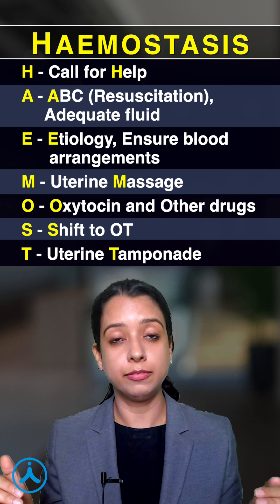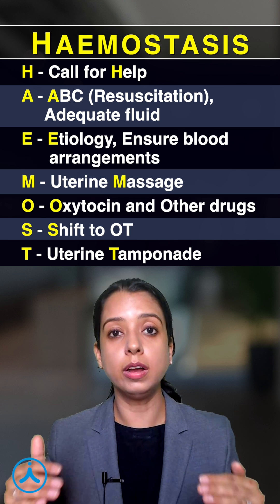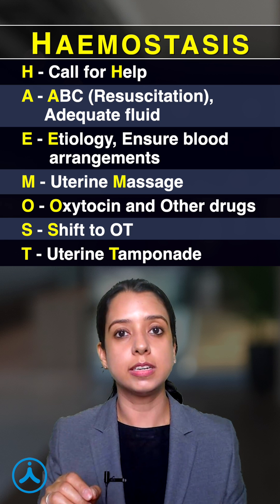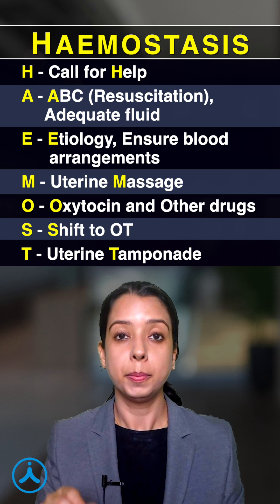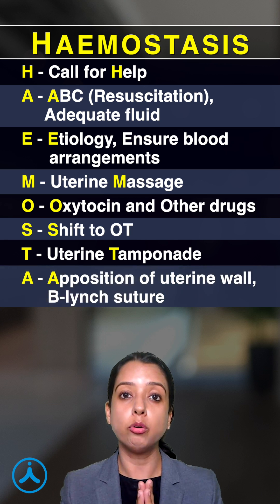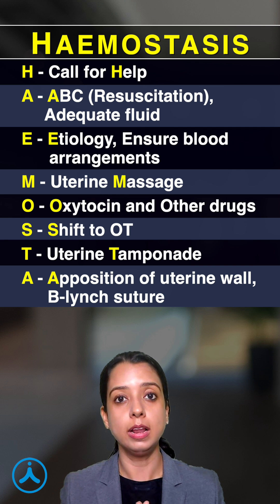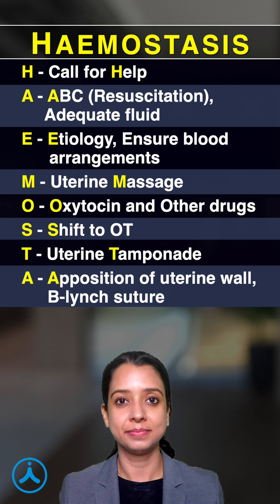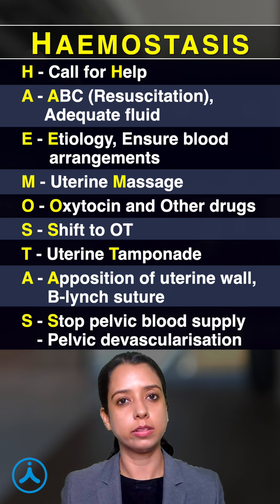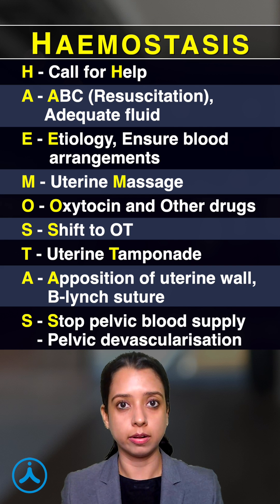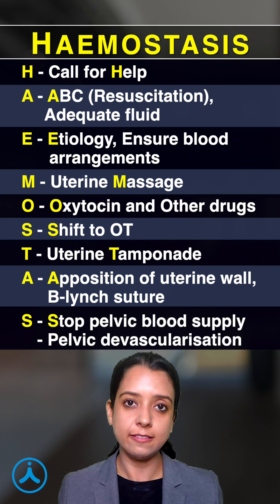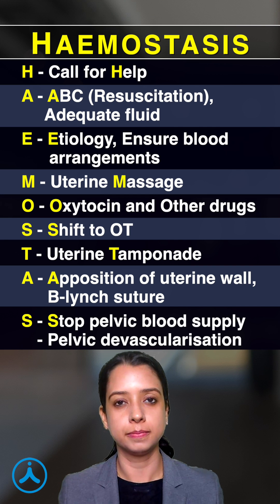If tamponade doesn't work, next is surgical management, which starts from A. A is opposing the uterine wall by B-Lynch suture. S is to stop the vascular supply to the uterus by systematic pelvic devascularization.